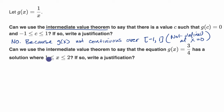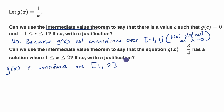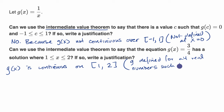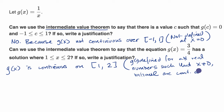First, let's look at the interval. If we're thinking about the interval from one to two, our function is going to be continuous over that interval. So g of x is continuous on the closed interval from one to two. g is defined for all real numbers such that x does not equal zero, and rational functions like one over x are continuous at all points in their domains.